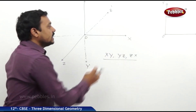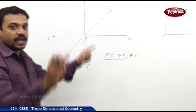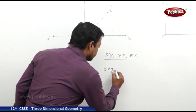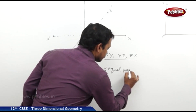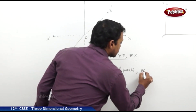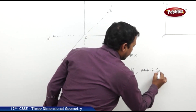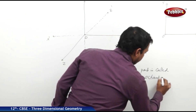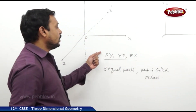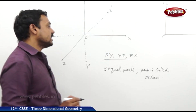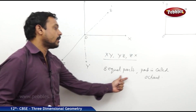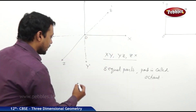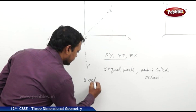These three planes divide the entire space into eight equal parts, and each part is called an octant. So the three coordinate planes xy, yz, and zx divide the space into eight equal parts, and each part is called an octant. Hence there are eight octants.